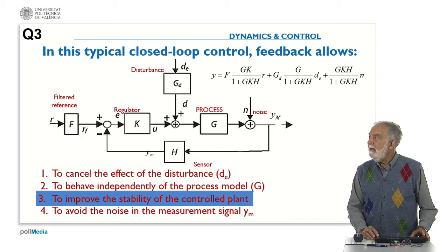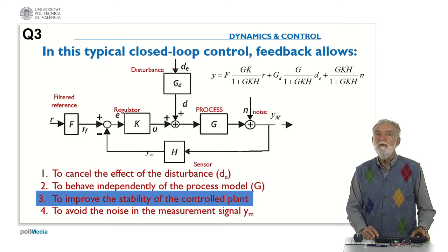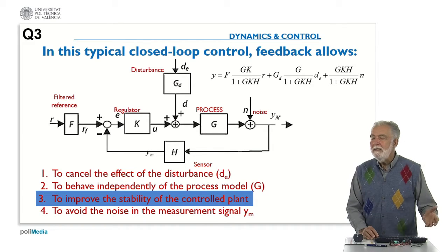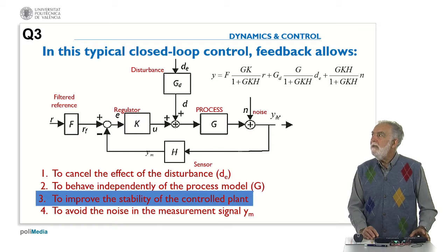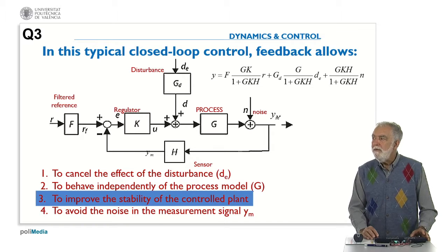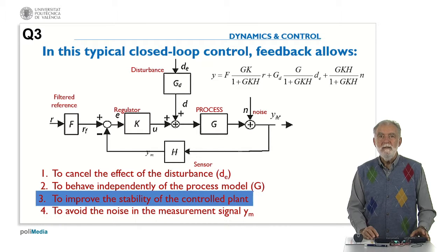So the idea which is fully clear is that the feedback is used to improve the stability of the control plant. We are never going to use a feedback to destabilize a stable plant. So the correct answer is feedback allows to improve the stability of the control plant. Thank you.